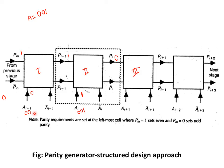Since we have applied 0, we need to calculate in this particular data how many 1s are present. Here we have only 0, so the number of 1s will be 0, which is an even number of 1s. If we have an even number of 1s at the input side, the parity output is 1. So here we get 1 from the previous stage output.